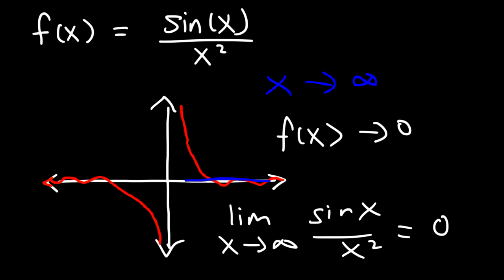And whenever the limit approaches a specific number then you can say that the sequence sine n over n squared is going to converge. And so by graphing it you can look at the end behavior of the graph and get a good idea if the sequence will converge or diverge.